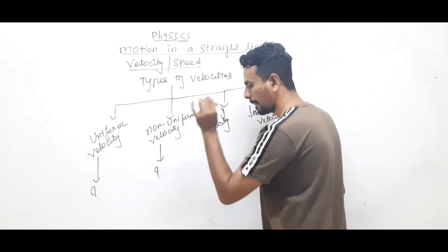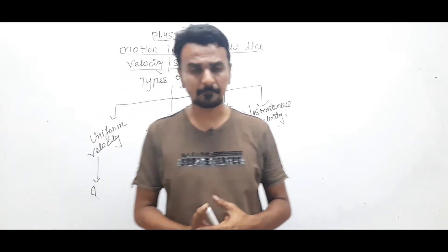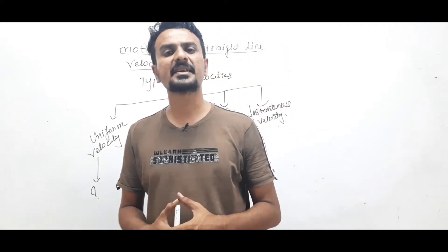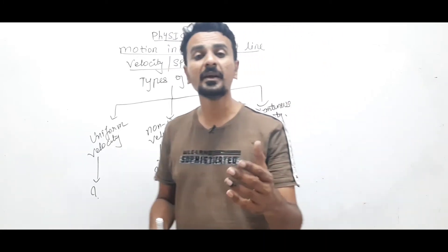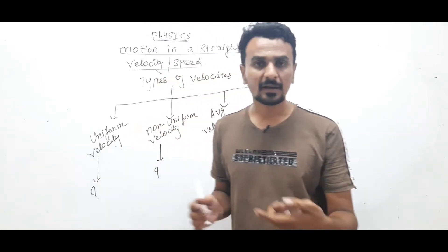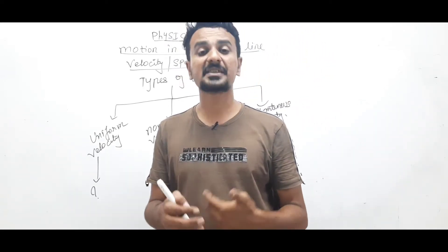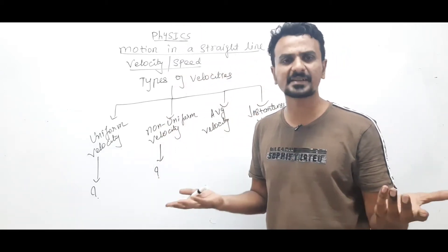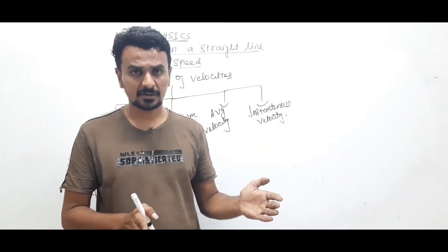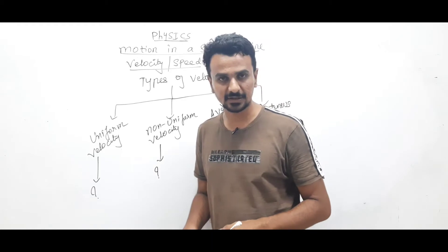Non-uniform velocity: when the object travels unequal displacements in equal intervals of time, it is said to be moving with non-uniform velocity. For example, first 1 second it covers 2 meters, next 1 second it travels 5 meters, next 1 second it travels 0.1 meters, and so on. The displacements undergone by the car in equal intervals are different. Such motion is known as non-uniform motion and the velocity is known as non-uniform velocity.